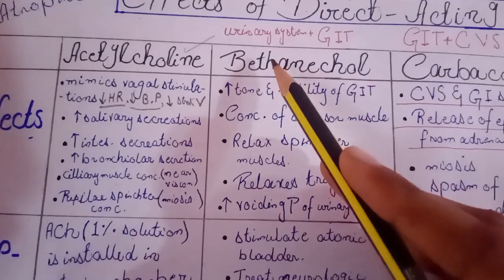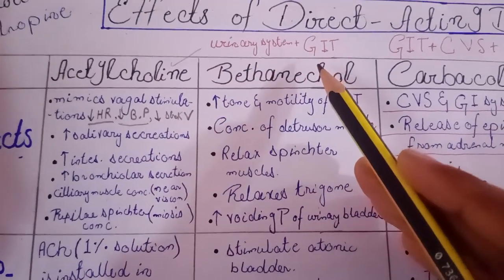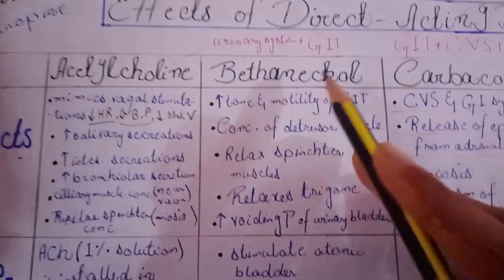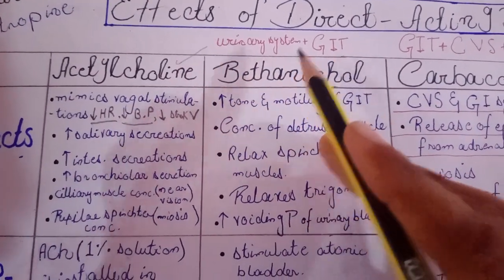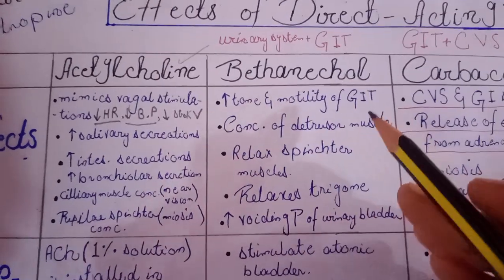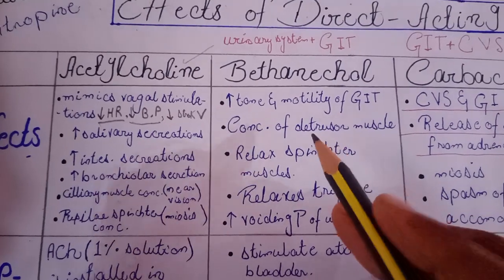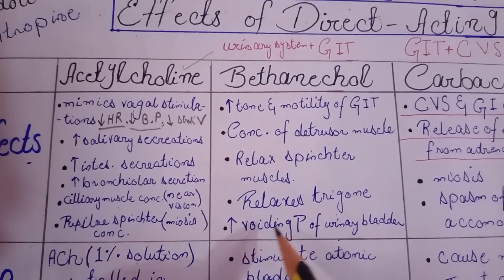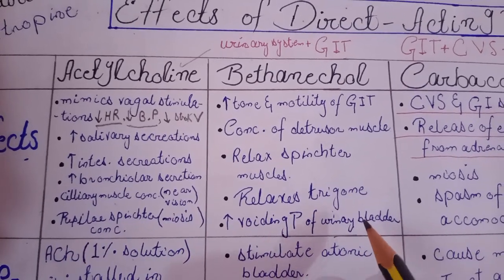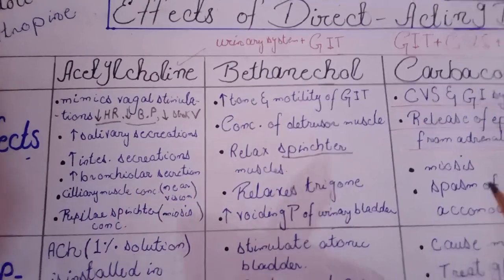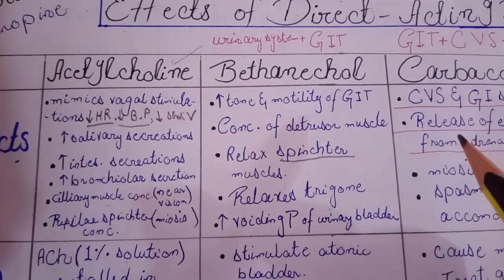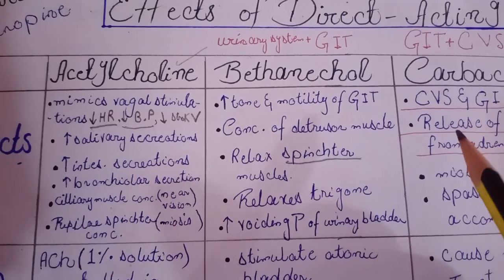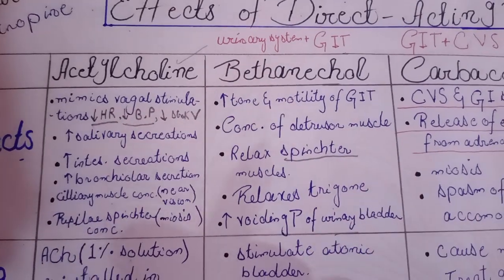Moving towards our next drug, that is bethanechol. Bethanechol's role affects the urinary system as well as the GI system. Its parasympathetic effects on the GI and urinary system include: in the GI system, the tone and motility of the GI tract increases. In the case of the urinary system, it causes contraction of the detrusor muscles and relaxes the trigone. Sphincters are specific muscles located around an opening — if you contract these muscles it closes the opening, and if you relax these muscles it opens that aperture.